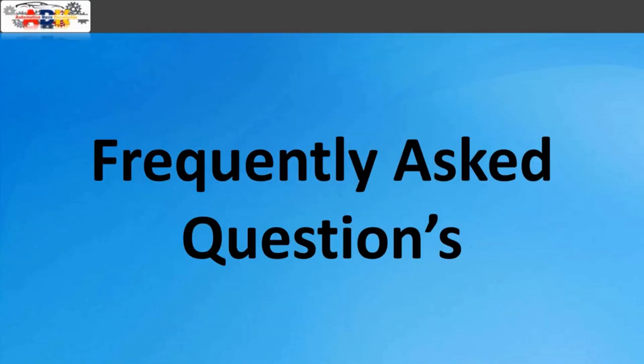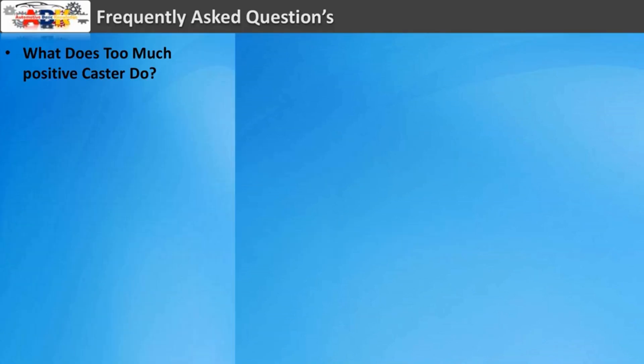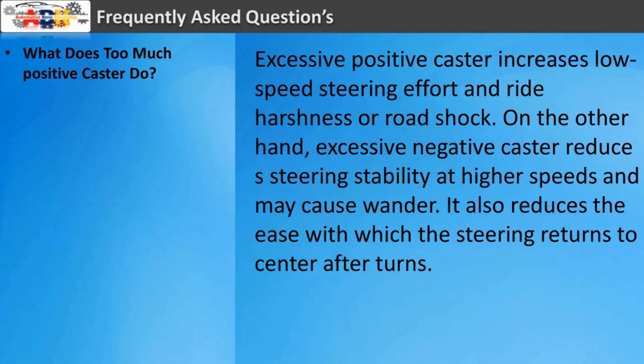Frequently asked question: What does too much positive caster do? Excessive positive caster increases low-speed steering effort and ride harshness or road shock. On the other hand, excessive negative caster reduces steering stability at higher speeds and may cause wandering. It also reduces the ease with which the steering returns to center after turns.